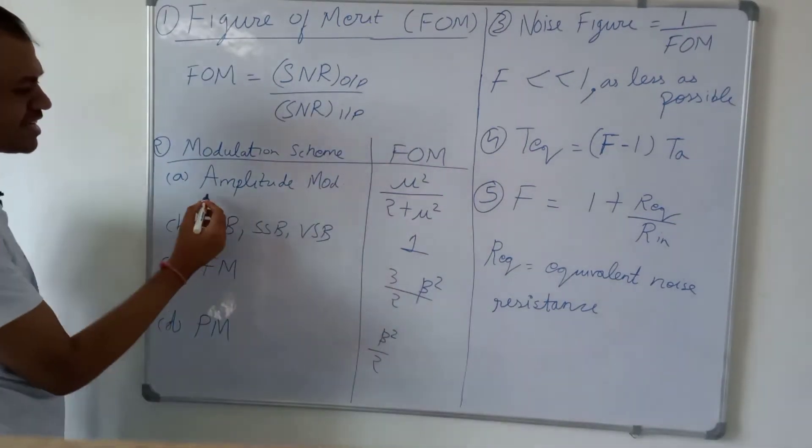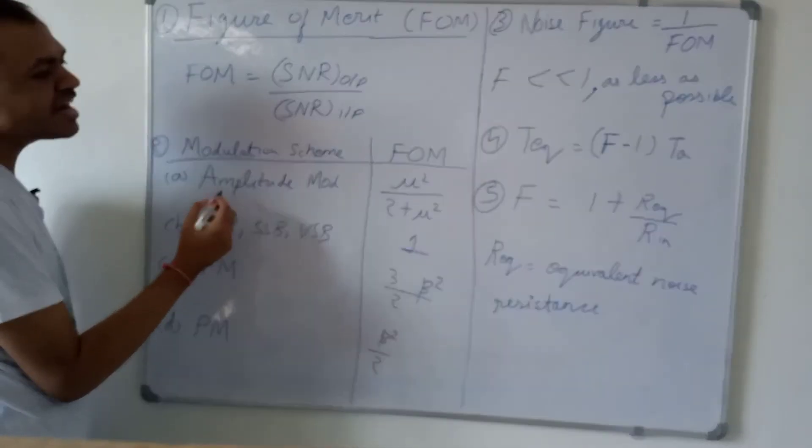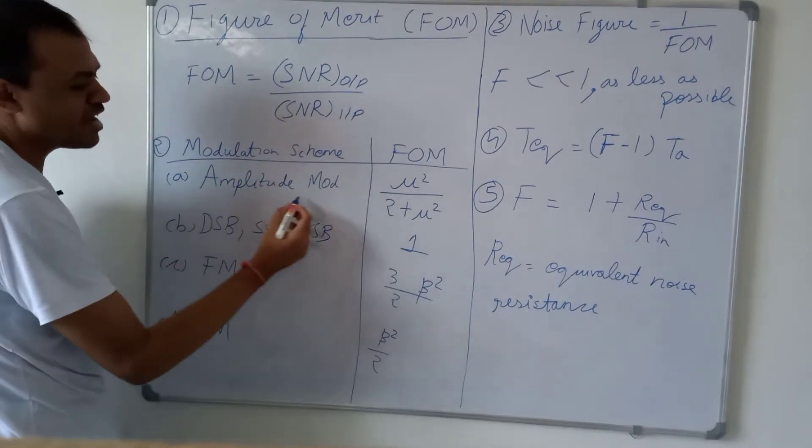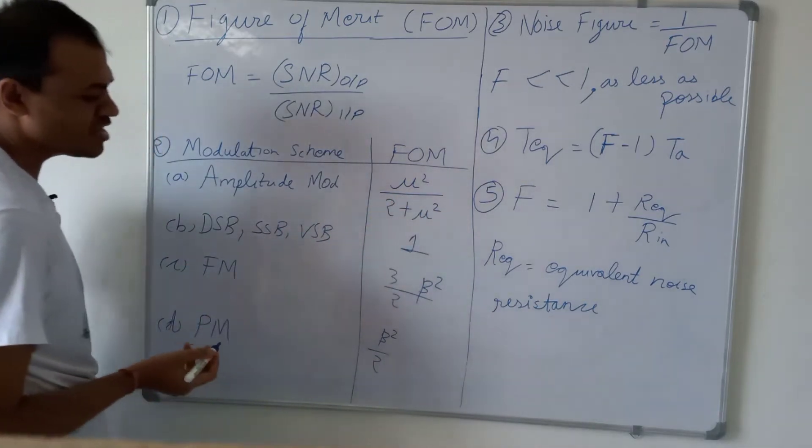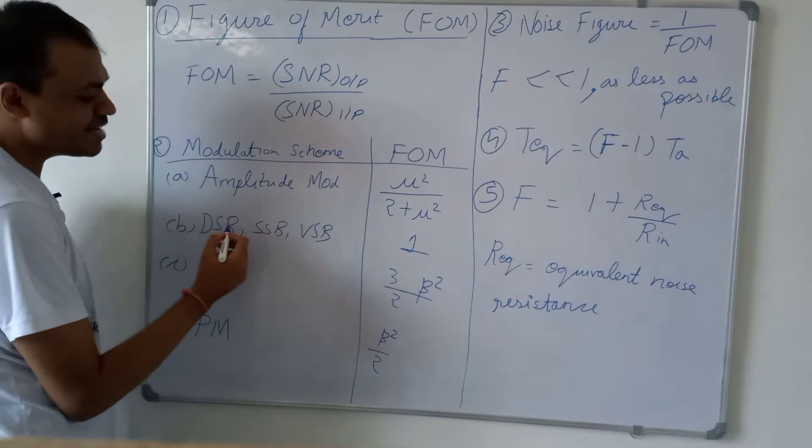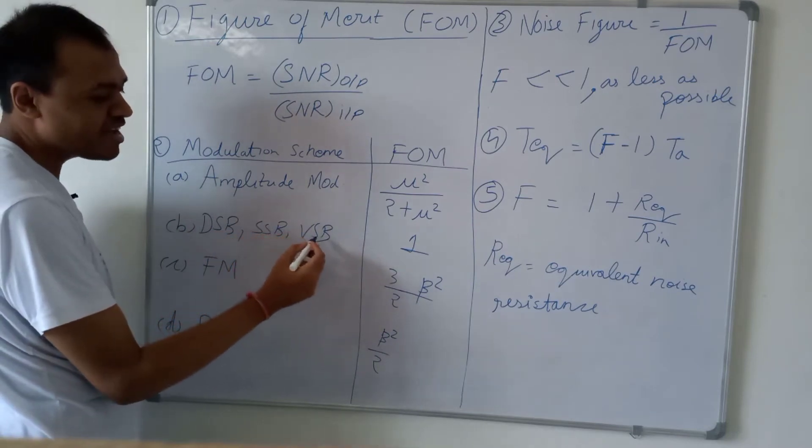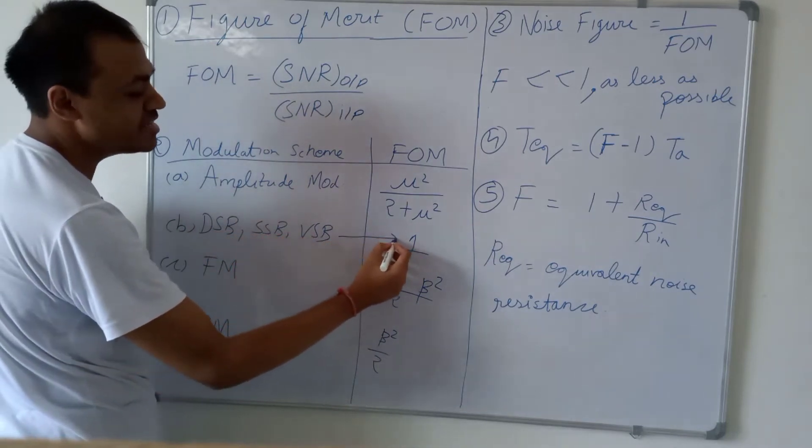Now, for modulation schemes, there are different figures of merit. For amplitude modulation, figure of merit is mu square upon 2 plus mu square, where mu is the modulation index. For double sideband, single sideband, and vestigial sideband, the figure of merit is 1.